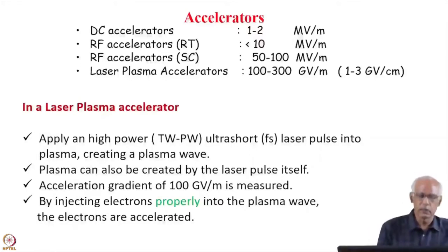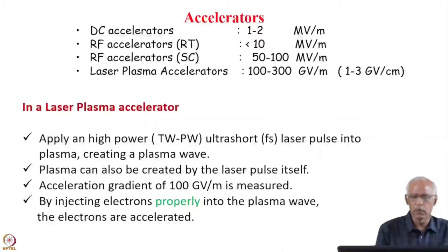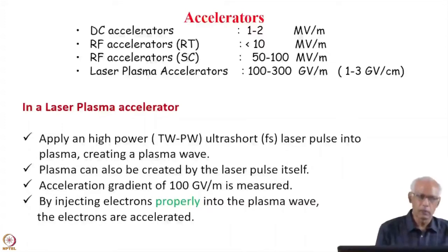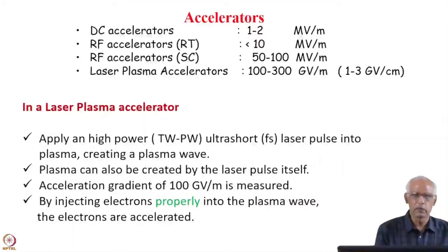What is this laser plasma accelerator? It involves applying a high power — from terawatt to petawatt — ultra-short femtosecond laser pulse into a plasma. The plasma can be created either by the laser pulse itself or by some other pulse. Once the plasma is created, you inject the ultra-short high-power laser beam, and that will generate an electron pulse beam, which is responsible for producing the accelerating gradient.